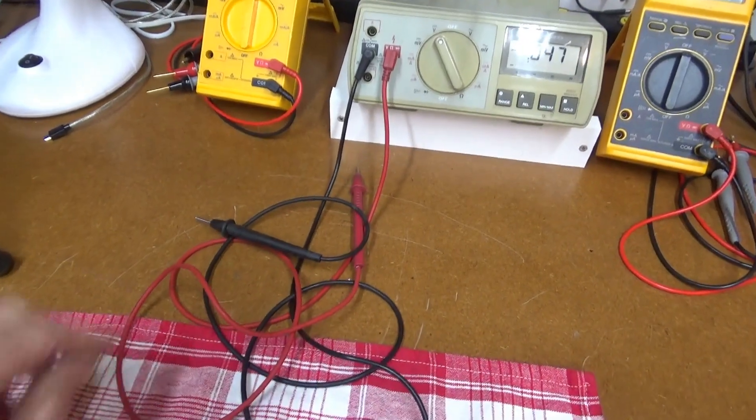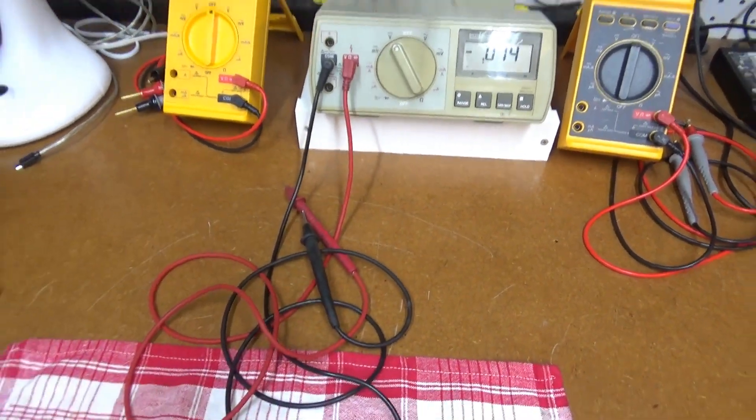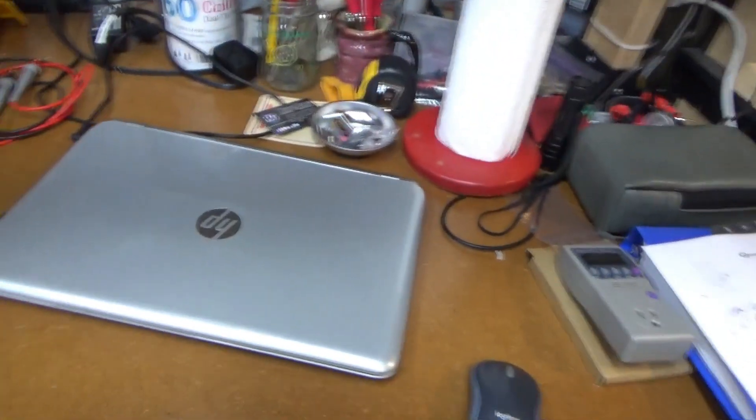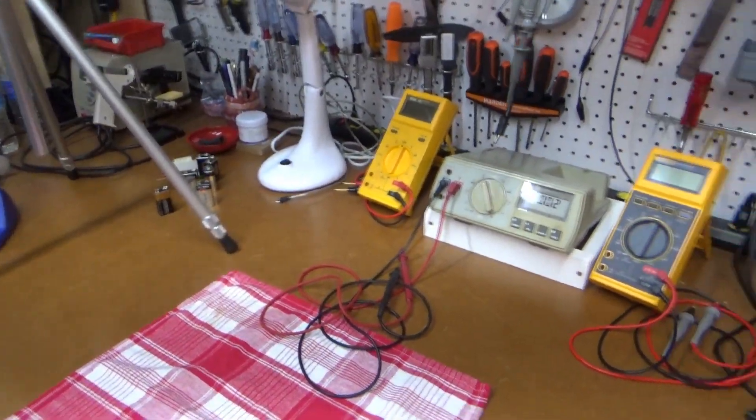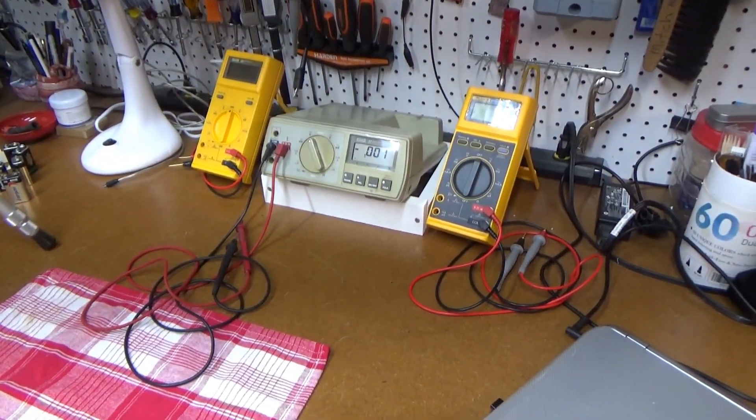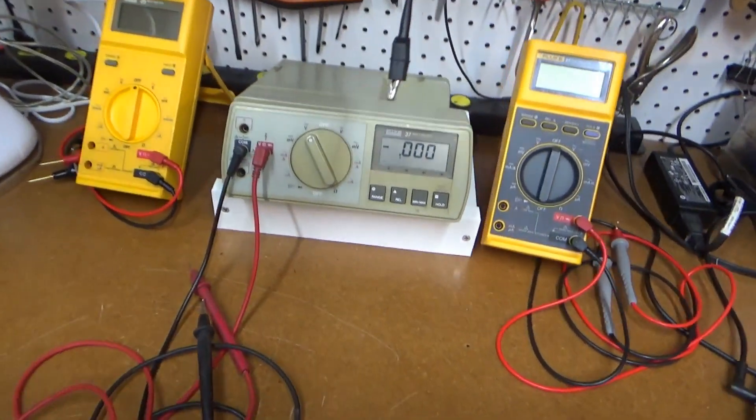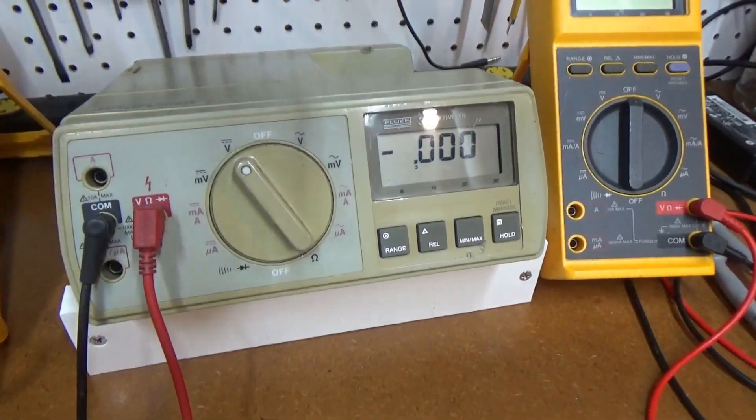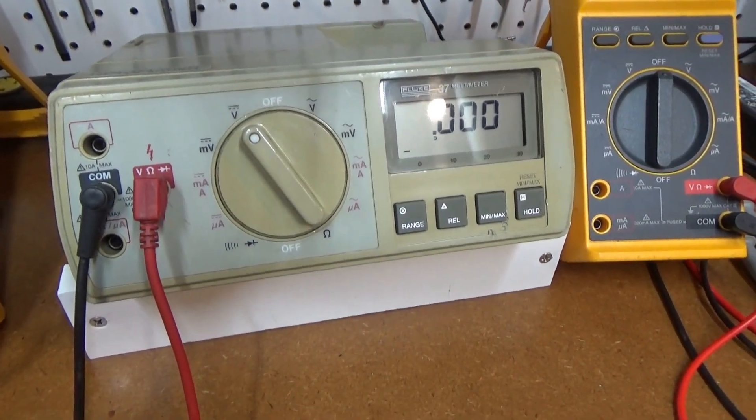But I like it. I think I'm gonna leave it right there and get some longer leads for it. These are original ones that came with it, so I can reach everywhere on the bench and just use that as the bench meter. So that's it for the Fluke 37. Thanks very much for watching, see you in the next video.